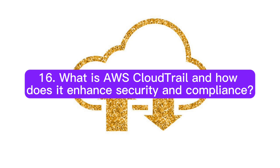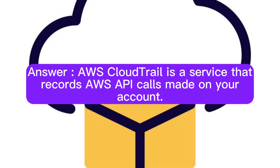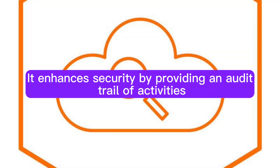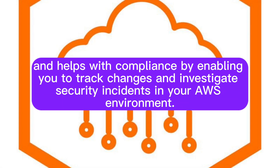Question 16: What is AWS CloudTrail and how does it enhance security and compliance? AWS CloudTrail is a service that records AWS API calls made on your account. It enhances security by providing an audit trail of activities, and helps with compliance by enabling you to track changes and investigate security incidents in your AWS environment.